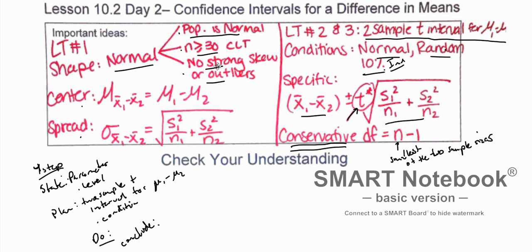Then we need to test conditions. The conditions are: it needs to be random, it needs to satisfy the 10% condition for independence, and we have to have normality. Normal, like in all the other ones when you talk about means — population is normal. Either you're going to use the central limit theorem where you have a sample size greater than or equal to 30, or if you don't have any of these, you're going to graph out the two sample distributions and then see if there are no strong skews or outliers.